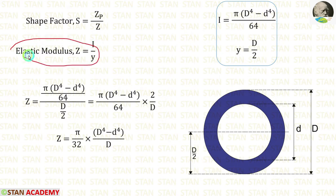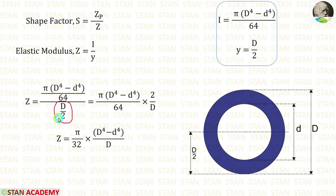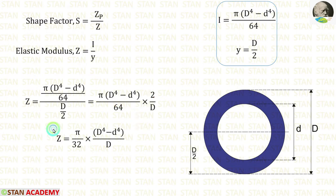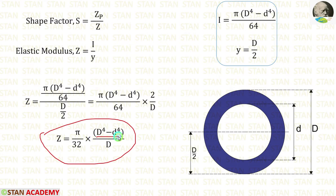In the elastic modulus formula, we can apply the values of moment of inertia and y. We can take D by 2 inversely and multiply. We can cut this 2 and 64, so here we will have 32. Finally, we are getting Z is equal to pi by 32 into caps D power 4 minus small d power 4, by caps D.